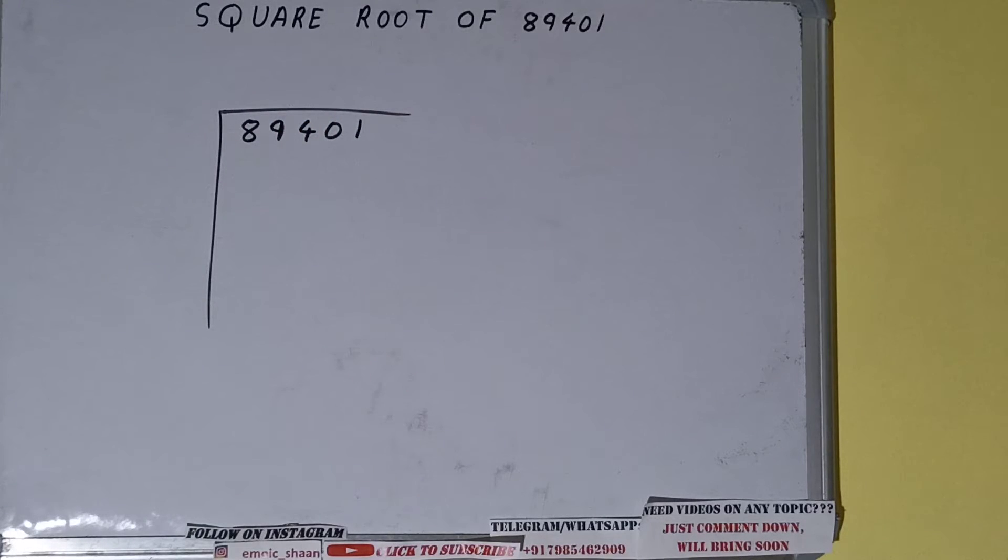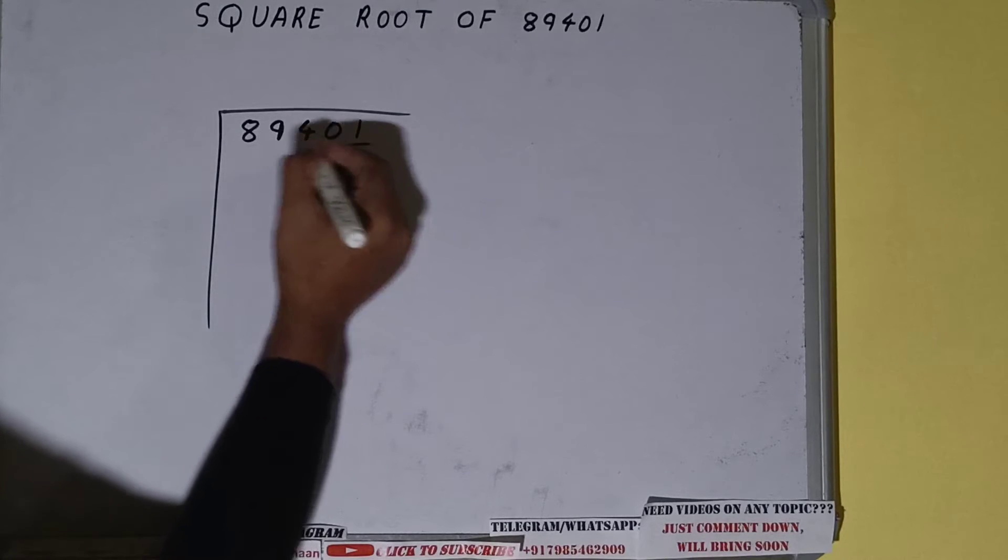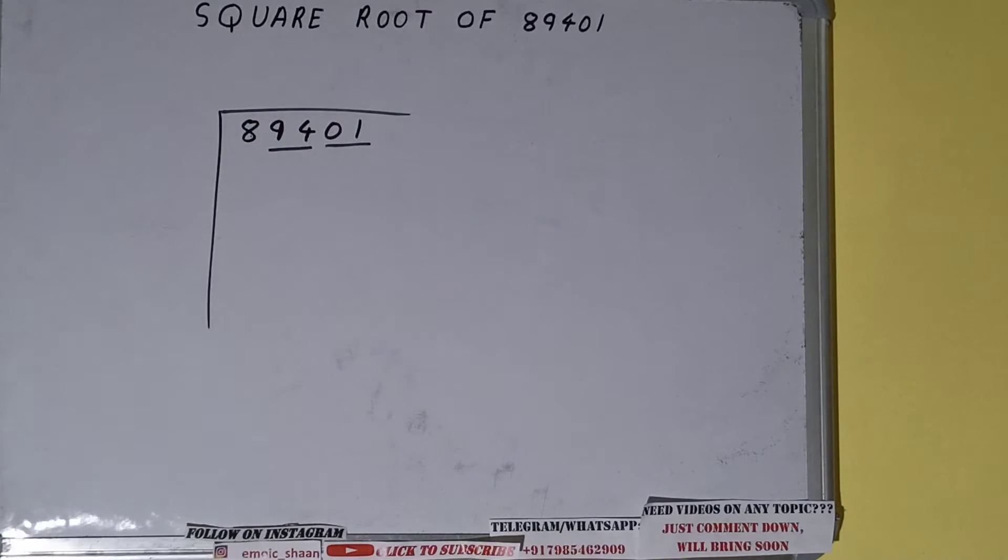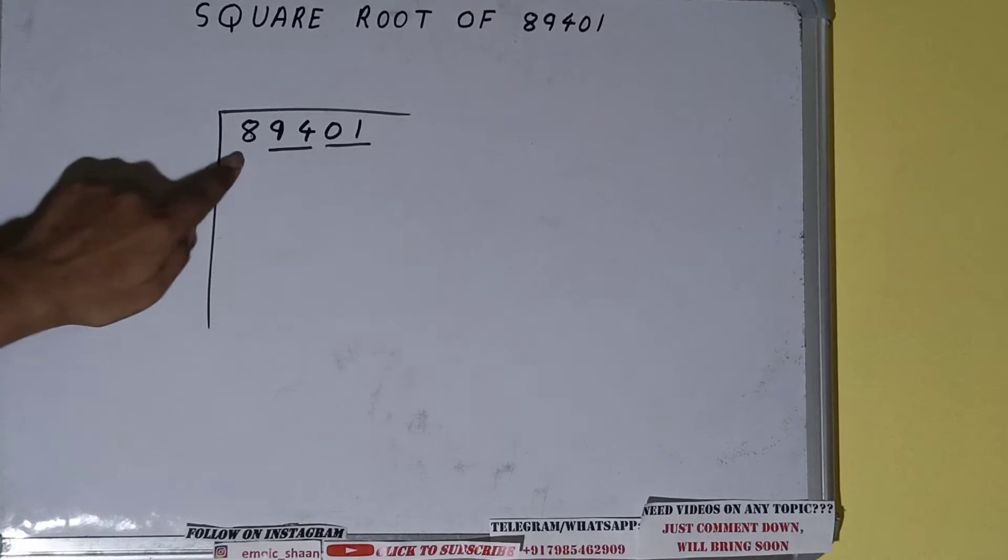The next thing we need to do is form pairs from the right hand side. So one pair will be this, one pair will be this, and this will be left out. So first we'll divide this 8 and then we'll bring down the pairs.